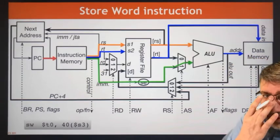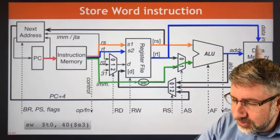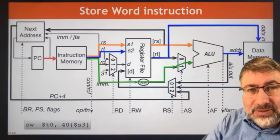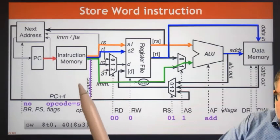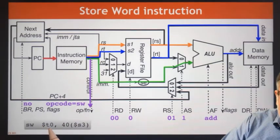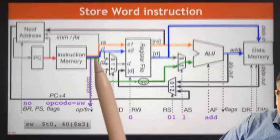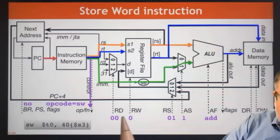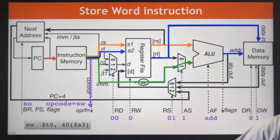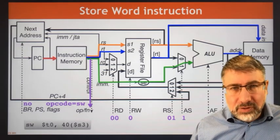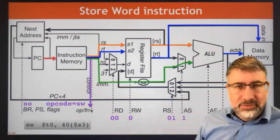In both load and store, RT is used as the data register. In one case it's presented as input; in the other it's used as a location for output. The only difference is what happens at data memory — for store, we tell data memory to write instead of read. The opcode is now store word. T0 is the source of data rather than destination; we put T0 in memory at S3 plus 40. We're not writing to the register file. ALU source is 1 for the immediate value; ALU function is add. Data memory read is off; data memory write is on. That's the operation of the store word instruction. Load and store are immediate-format instructions that interact with data memory.